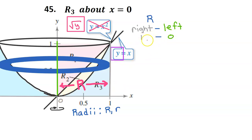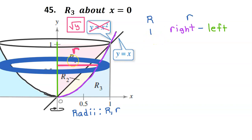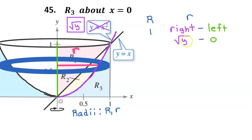1 minus 0 is just 1. Now let's find an expression for the small radius. Again, we can find an expression by subtracting the function on the right minus the function on the left. In this case, the function on the right is the parabola, which is the square root of y, and the function on the left is 0. Radical y minus 0 is just radical y.